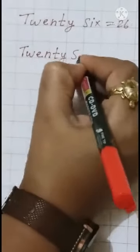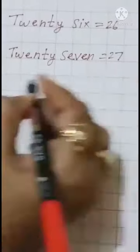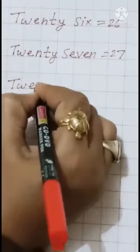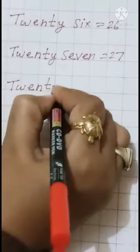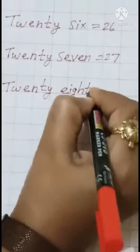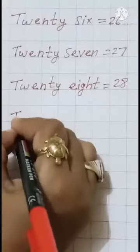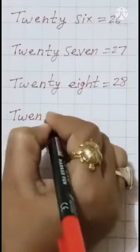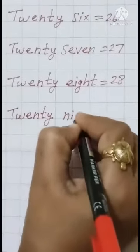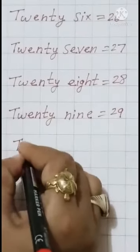S-E-V-E-N, 27. Next spelling: 28. T-W-E-N-T-Y, 20. E-I-G-H-T, 28. Next: 29. T-W-E-N-T-Y, 20. N-I-N-E, 29.